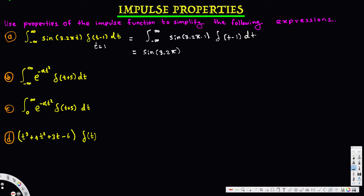Now let's look at the second expression, also going from negative infinity to infinity. The impulse is located at t equals negative 5, found by equating the argument to zero. We evaluate e^(−alpha·t²) at t = −5, giving us e^(−alpha·25), which can also be written as e^(−25·alpha). That is the simplification of this expression.